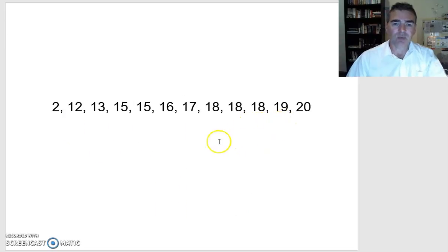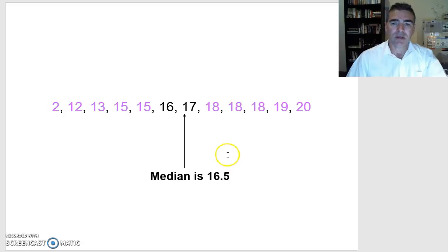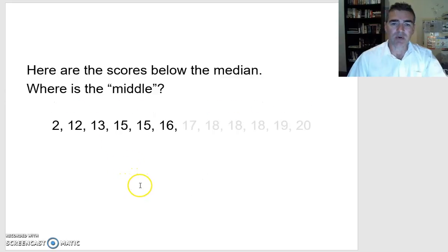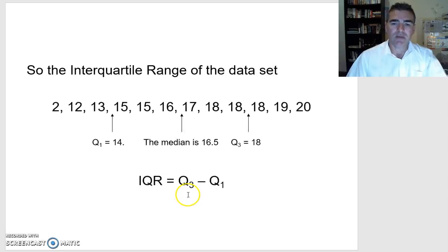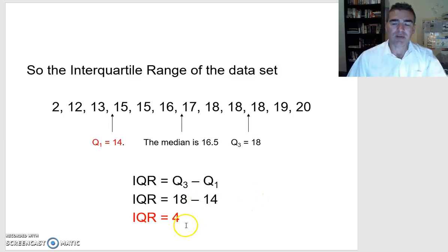So there's our data set. We need to find the interquartile range, which means we need the lower quartile and the upper quartile. We go and find the middle score — because there are two middle scores, the median is 16.5. From there we have a lower set and an upper set of scores, and we find the median of each. Our lower quartile is 14 and our upper quartile is 18. So our interquartile range is the upper quartile minus the lower quartile, which gives us 4.